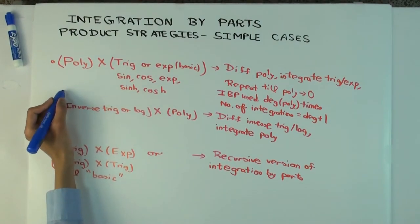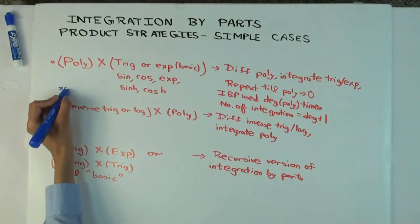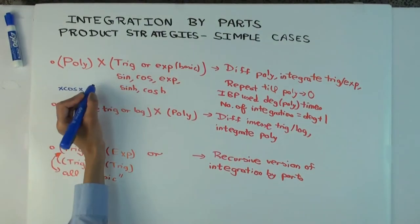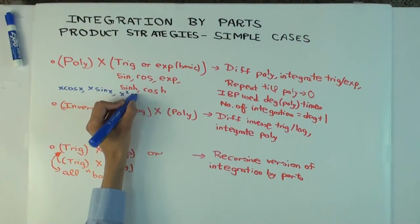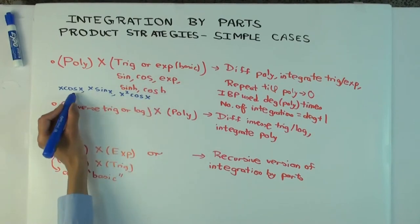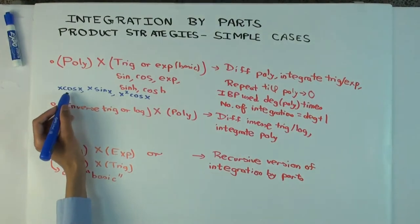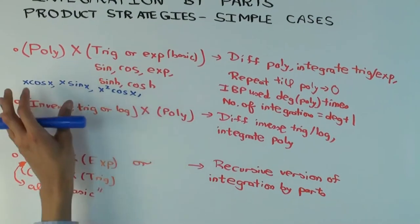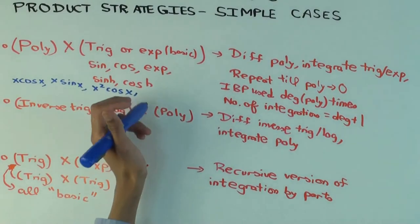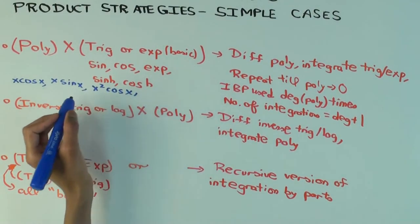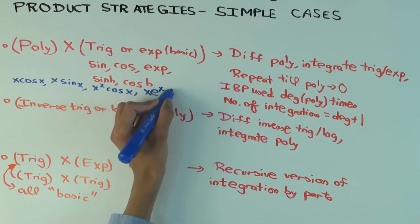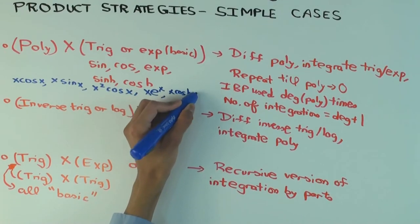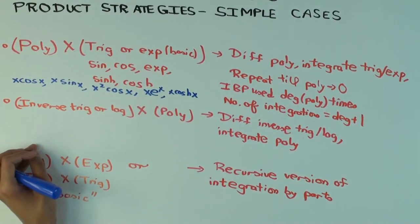X cosine x. X sine x. X squared cosine x. By the way, I could also do something like X cosine 2x, or change it by a linear factor inside or outside. I'm just using these because these are simpler to do, and I want to just concentrate on the technique, rather than careless error. X e to the x, that's the exponential type. X hyperbolic cosine x, et cetera.